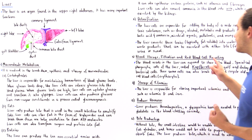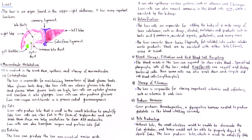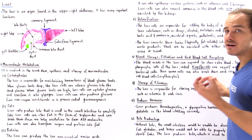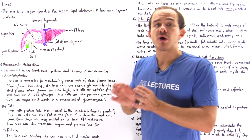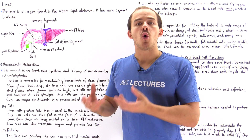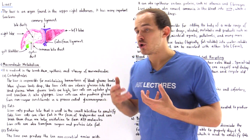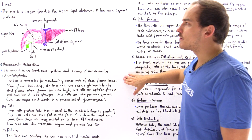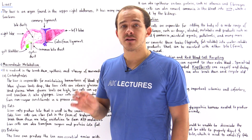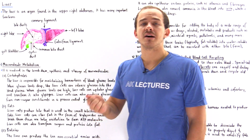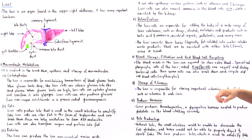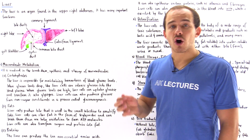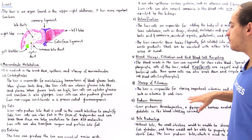These same Kupffer cells can also recycle and break down old red blood cells — erythrocytes — that no longer function properly. Function number four of the liver is to store important vitamins such as vitamin D, as well as iron, which are essential for our body.